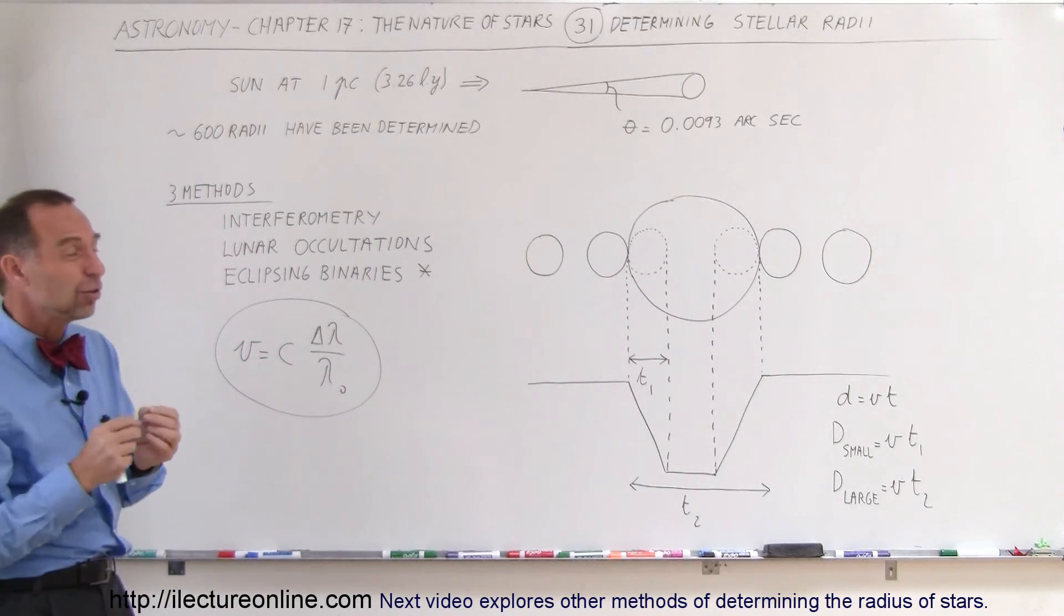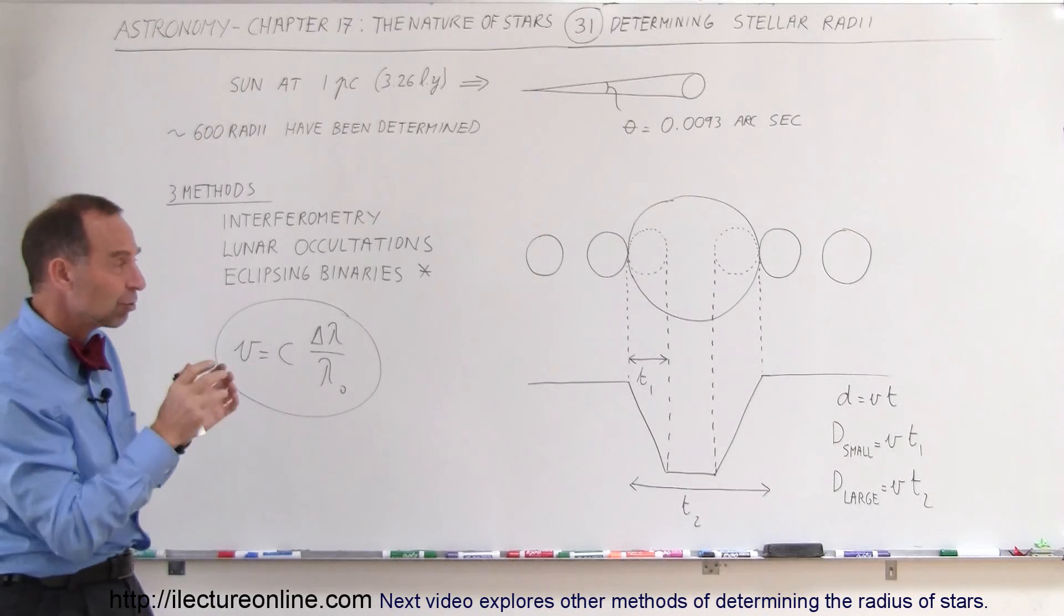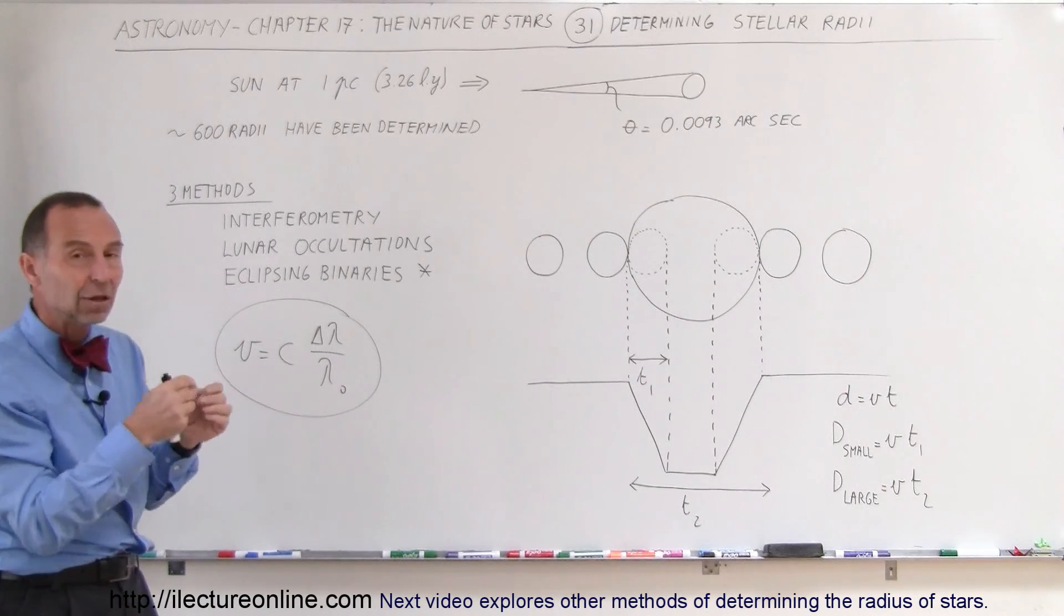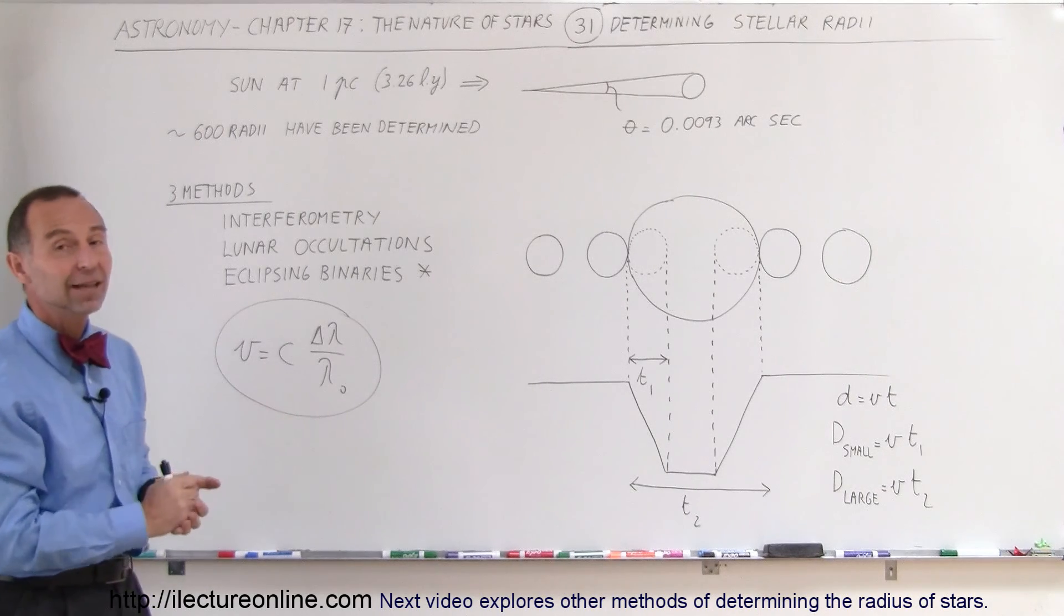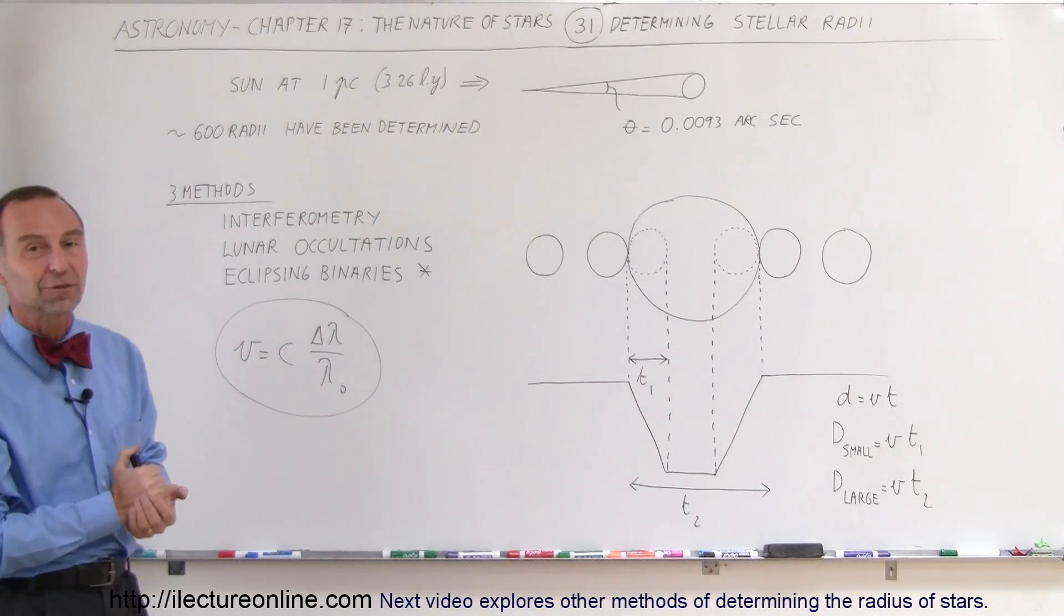It takes a lot of painstaking measurements over time to get that to somewhat of an accurate value. As you can see, it can be done and we do so, and that's how we determine the radius of a star.